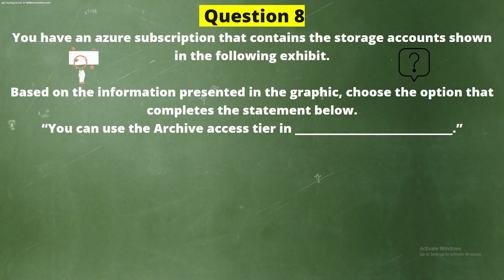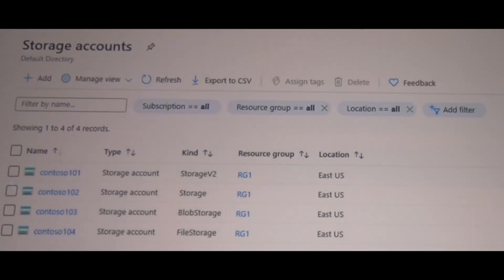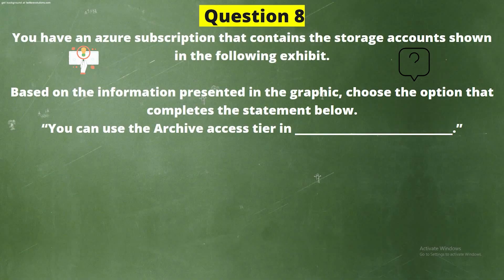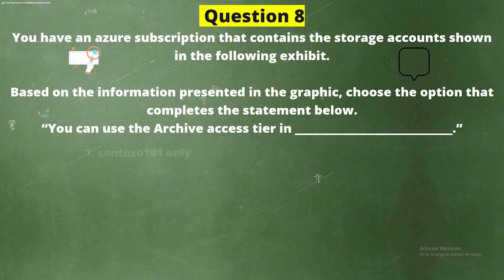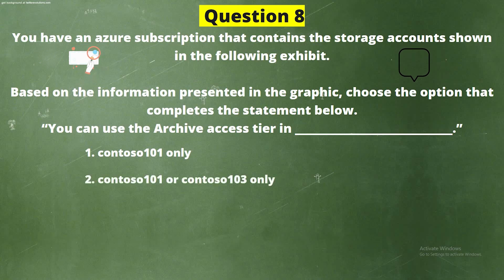You have an Azure subscription that contains the storage accounts shown in the following exhibit. Based on the information presented in the graphic, choose the option that completes the statement below. You can use the Archive Access tier in — the options are: option 1, Contoso101 only; option 2, Contoso101 or Contoso103 only.